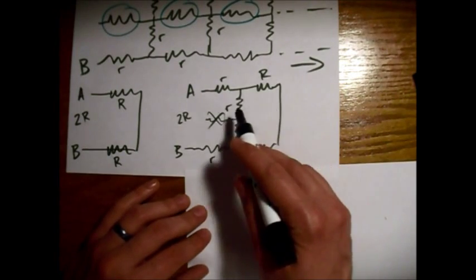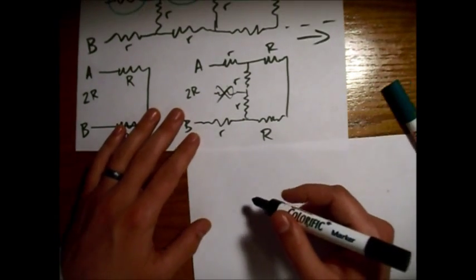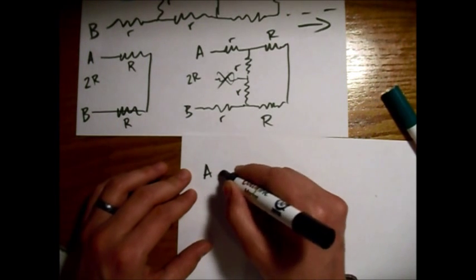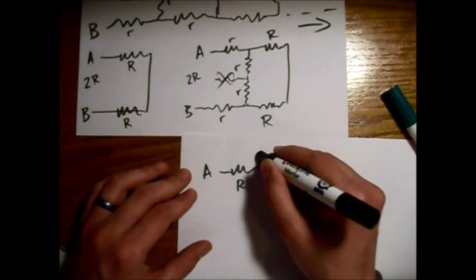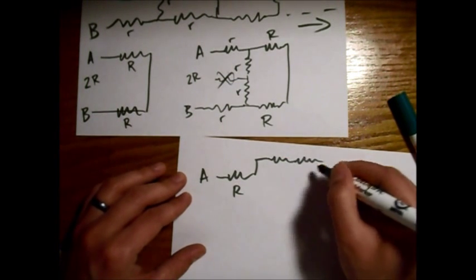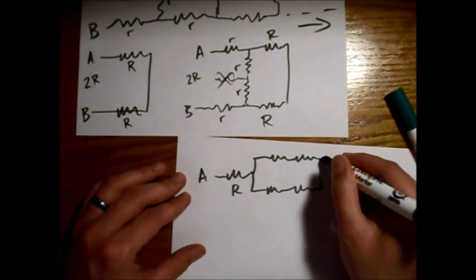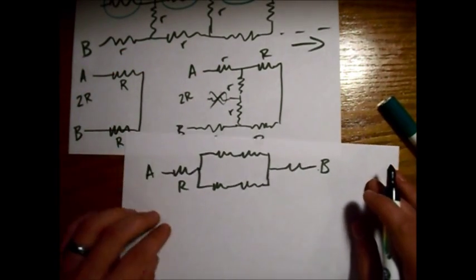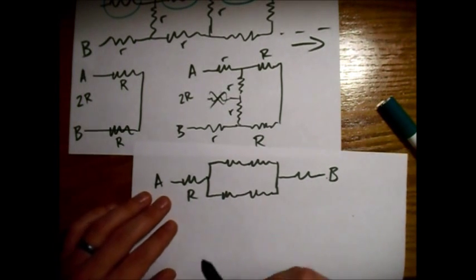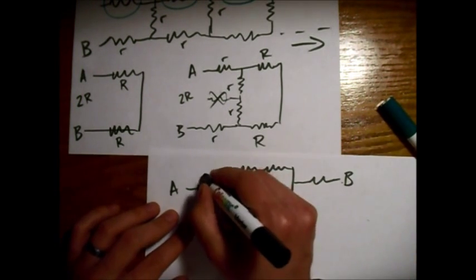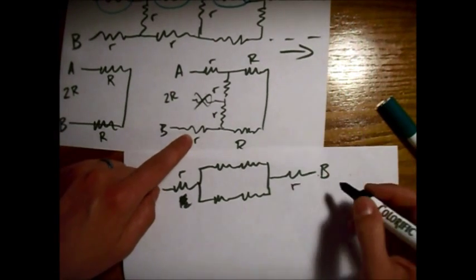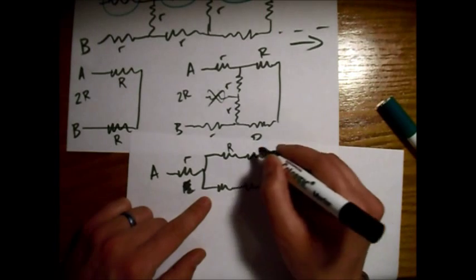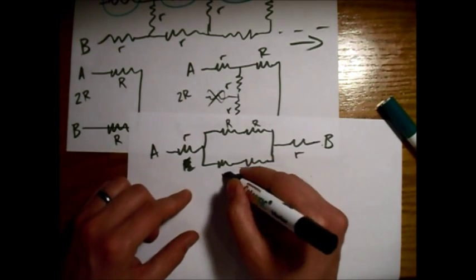Now we look at the resistance of this circuit. We have the series resistors. If I collapse this down: we have a little r, and then this circuit is equivalent to what we have here. We have a little r on each side, and then on one branch of the parallel part we have the two big R's, and on the other branch we have the two little r's.